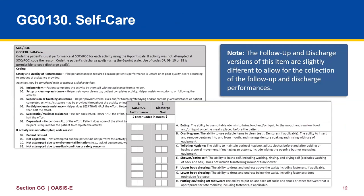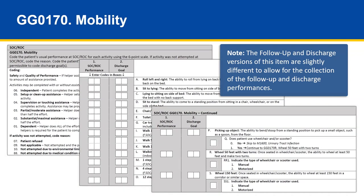Self-care is assessed at SOC-ROC, follow-up, and at discharge. Remember that you are addressing two separate aspects here at SOC-ROC: first, the functional status or performance level, and then establishing the discharge goal for each item. Note, follow-up and discharge versions of this item are slightly different to allow for the collection of follow-up and discharge performances. Here, we are looking at GG0170, Mobility, or the ability to perform certain specific tasks that are the basis for that activity. Again, for SOC-ROC, based on the specific definitions for each code, you are first entering your assessment at SOC-ROC, then establishing the goal for discharge.